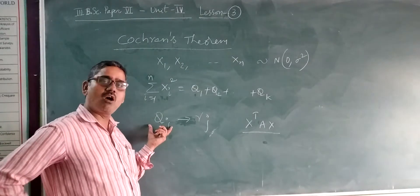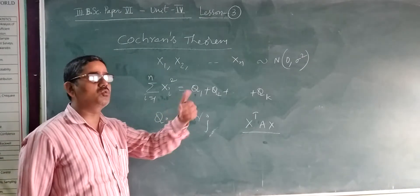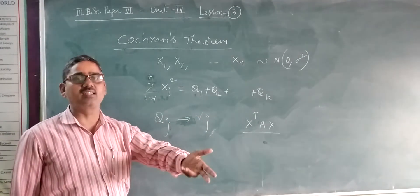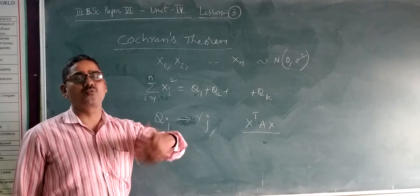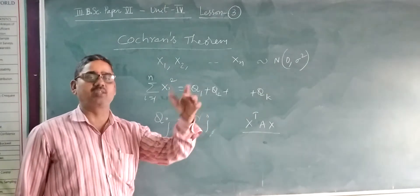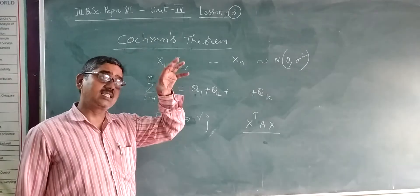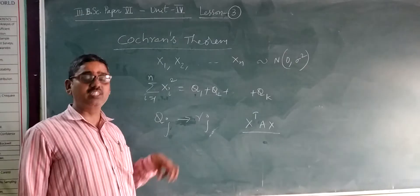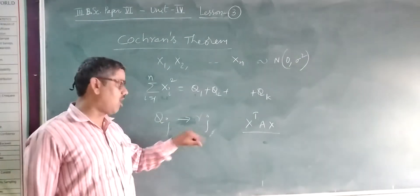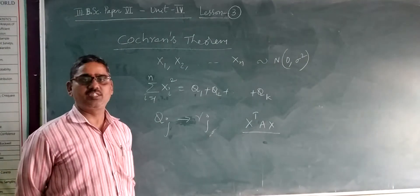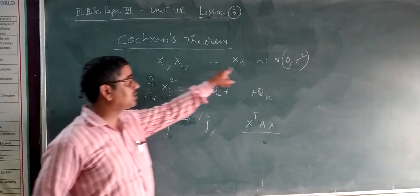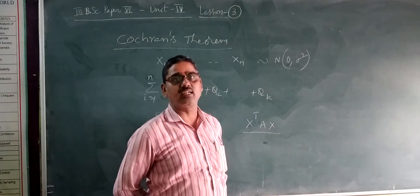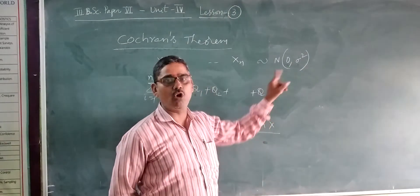Whatever QJ we have considered, it is a quadratic form in X1, X2, ..., XN — a form such as 3X1 squared plus 4X2 squared plus 5X3 squared and so on. Such a form QJ has rank RJ. Every X1, X2, ..., XN follows a normal distribution with mean 0 and variance sigma squared.